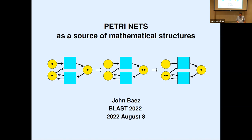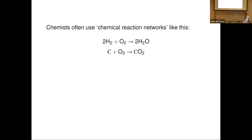Chemists like to use chemical reaction networks to describe chemical processes. If you've studied any chemistry you've seen examples of these. What you might not have known is that there's a serious mathematical industry of studying chemical reaction networks. Chemists will often assign a positive real number to each of these arrows, saying roughly how rapidly or eagerly that reaction occurs. From that extra information you can write down a set of differential equations called the rate equation.